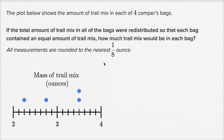Right now the bags have different amounts depending on which bag you look at, but we want to redistribute it. What we really want to do is take all of the trail mix in the four bags together and divide it by four so that they all have an even amount. So let's think about how much trail mix we have in these four bags together.